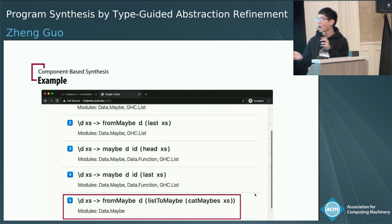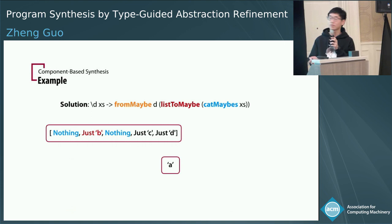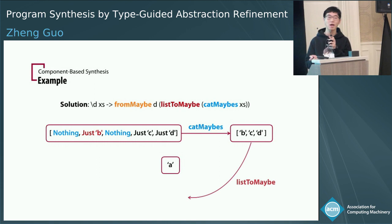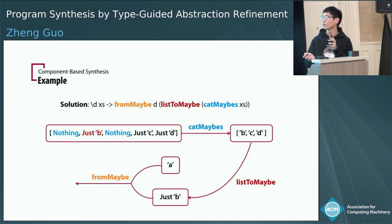Let me show you how this solution works on our example. First, the function catMaybes gets the non-empty values from the list, giving us a new list of characters. Then list2maybe extracts the first element in the list and puts it back into Just. Then another function fromMaybe looks at that optional value. If it's a Just, it returns the value in the Just; otherwise, it returns the default value for us.